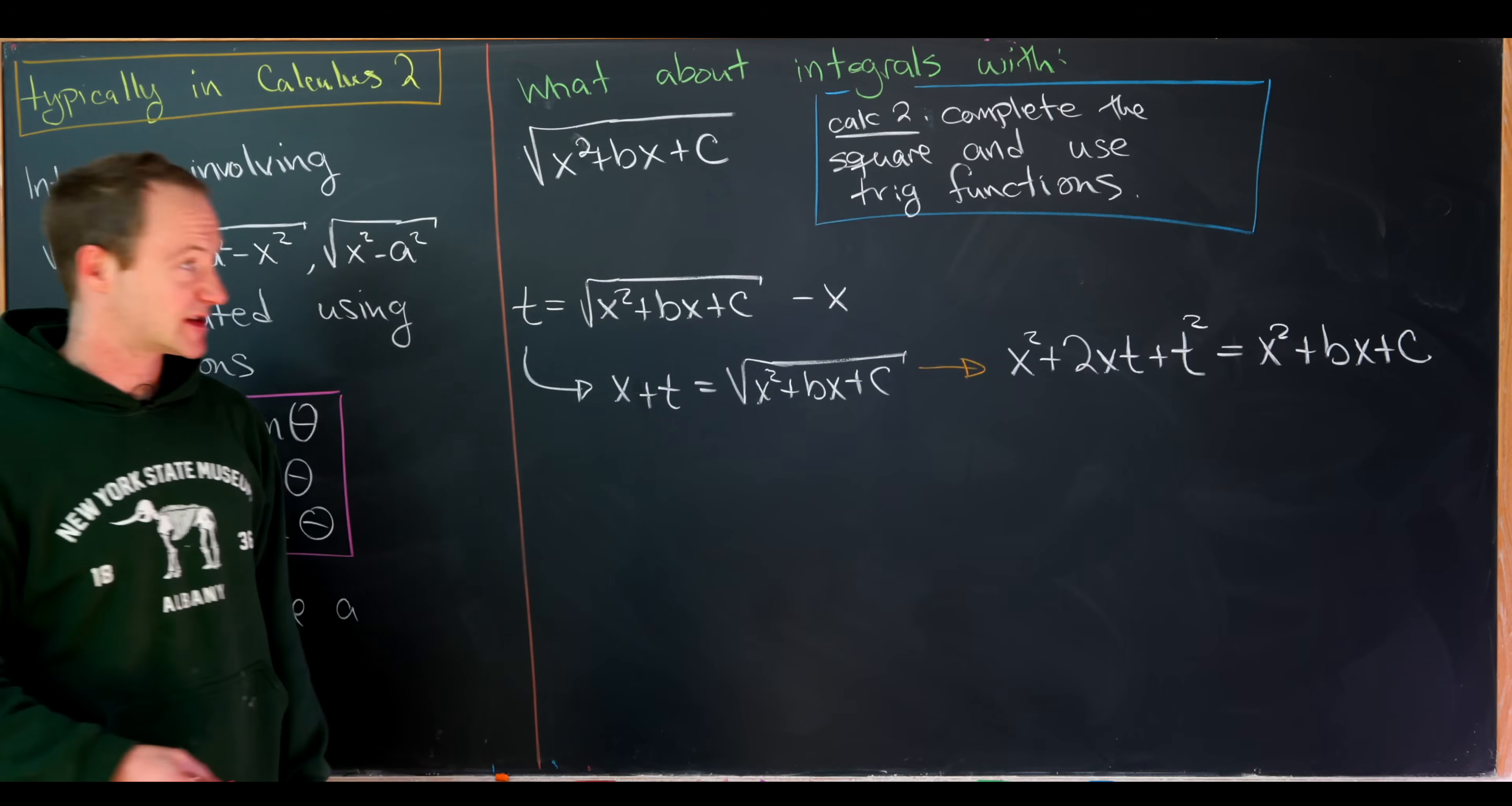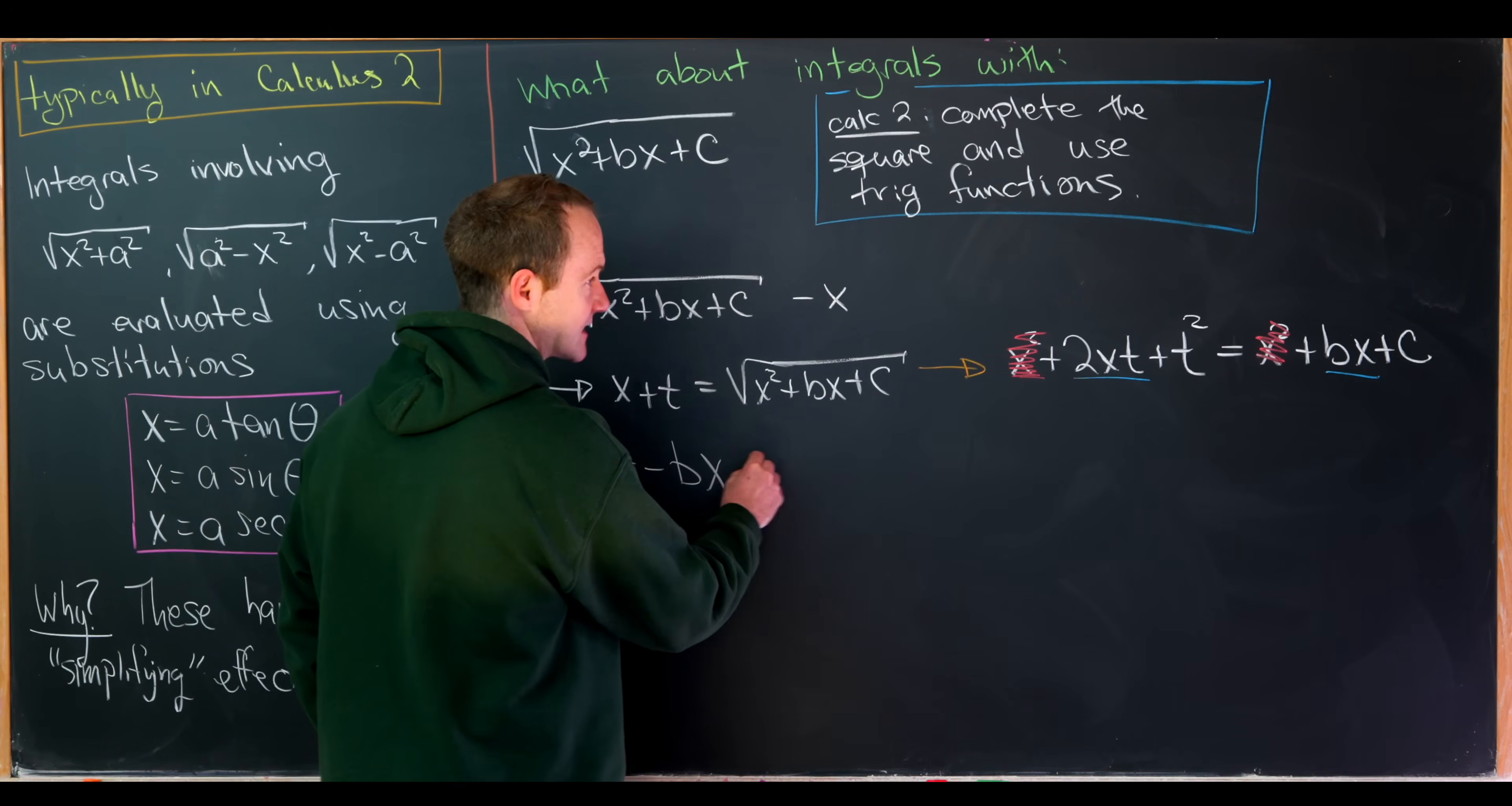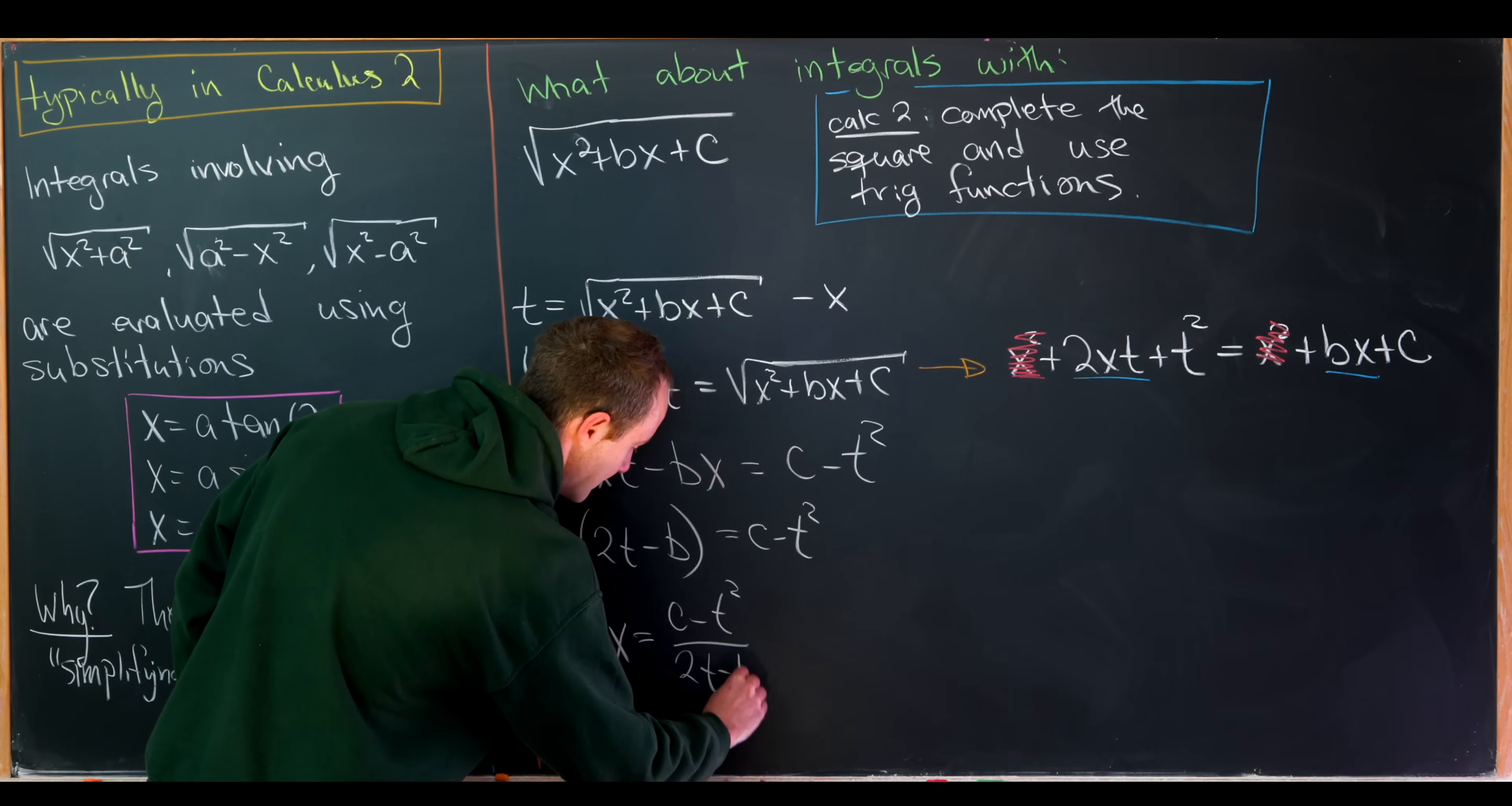And then we can start simplifying. So this x squared here, we'll cancel this x squared here. And then notice we've got exactly one, two terms that involve x's, and then two terms that do not involve x's. Notice we can move some things around. We'll have 2xt minus bx is equal to c minus t squared. We can factor an x out of this left-hand side, leaving us with 2t minus b equals c minus t squared, which tells us that x is equal to c minus t squared over 2t minus b.